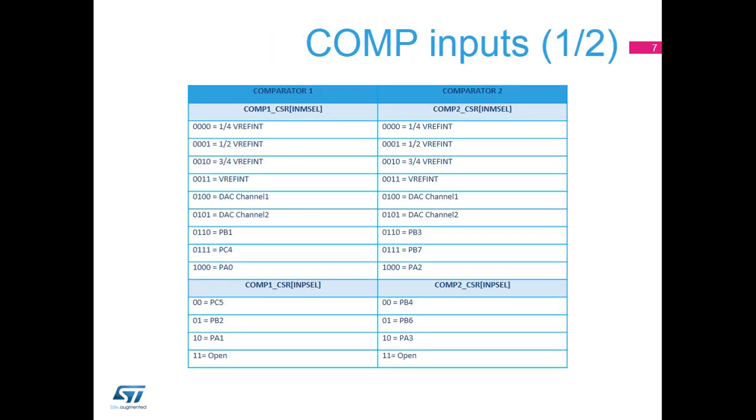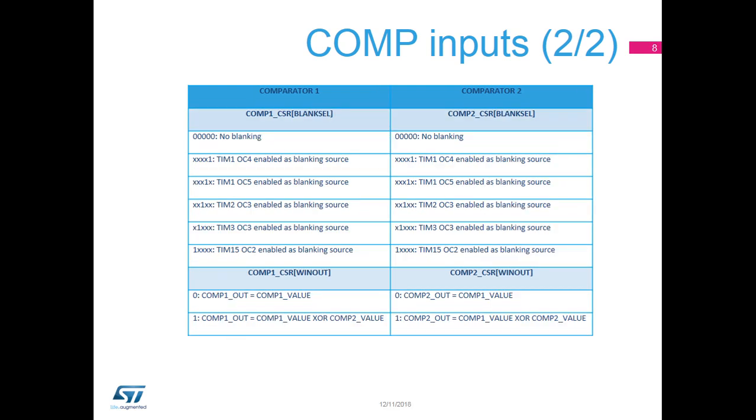Each comparator has a non-inverting input and an inverting input. The INM cell field in the Comp1 CSR and Comp2 CSR registers is used to select the inverting input. The INP cell field in the Comp1 CSR and Comp2 CSR registers is used to select the non-inverting input. Each comparator's output can be masked during a blanking time defined by the timer output CompareValue selected in the blank cell field. The two comparators can be associated to form a window comparator through the WinOut field.